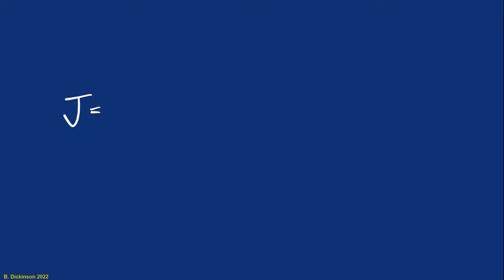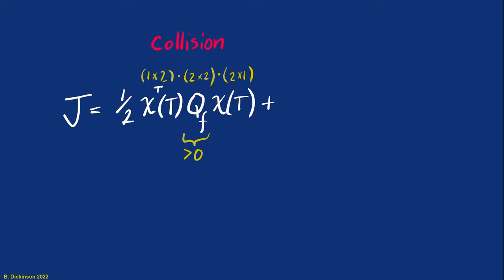All right, now it's time to create our performance index. The first term we'll work with is the collision term. So it's a final time term. We're going to pre-multiply it by a half. You'll see why that's important later on. And I'm going to make this quadratic, and the requirement is going to be that that matrix Q sub F, F for final, is going to be positive definite. So essentially what we have is the state X with two components in it, Z1 and Z2. It's X transpose, 1 by 2, times a positive definite matrix, 2 by 2, times X. So this term will always be greater than zero unless X is zero.